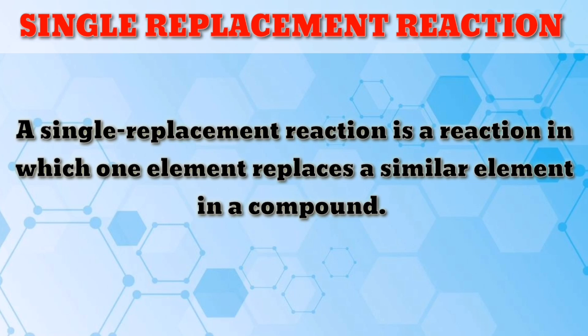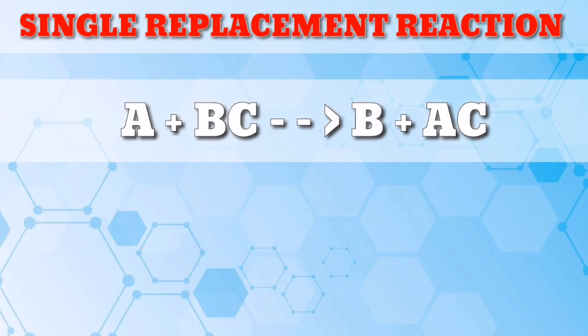The general form is A plus BC equals B plus AC. In this general equation, element A is a metal and replaces element B, also a metal, in the compound BC.